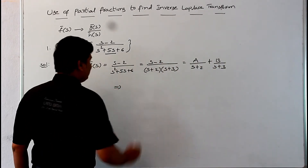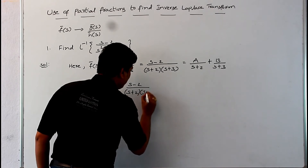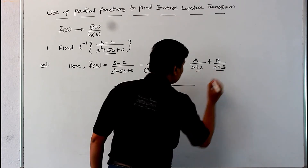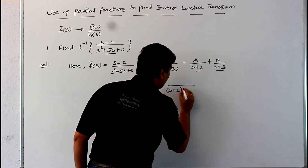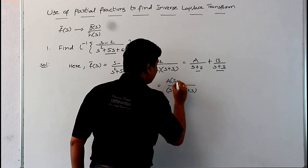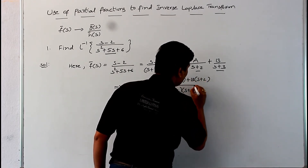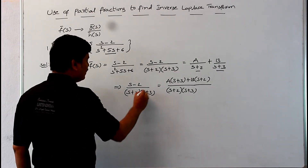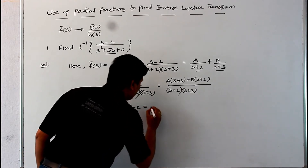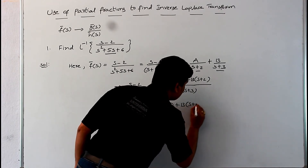So we can write the partial fractions as A by (s plus 2) plus B by (s plus 3). That implies (s minus 2) divided by (s plus 2)(s plus 3) is equal to [A(s plus 3) plus B(s plus 2)] divided by (s plus 2)(s plus 3). After cancelling the denominators we get: s minus 2 equals A(s plus 3) plus B(s plus 2).